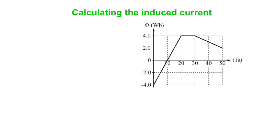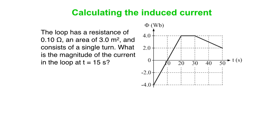Now we're going to get a little bit quantitative here. The resistance of the loop is a tenth of an ohm. It has an area of 3 meters squared. It's just got one turn. What's the magnitude of the current in the loop at t equals 15 seconds? You might want to pause and see if you can figure that out for yourself.